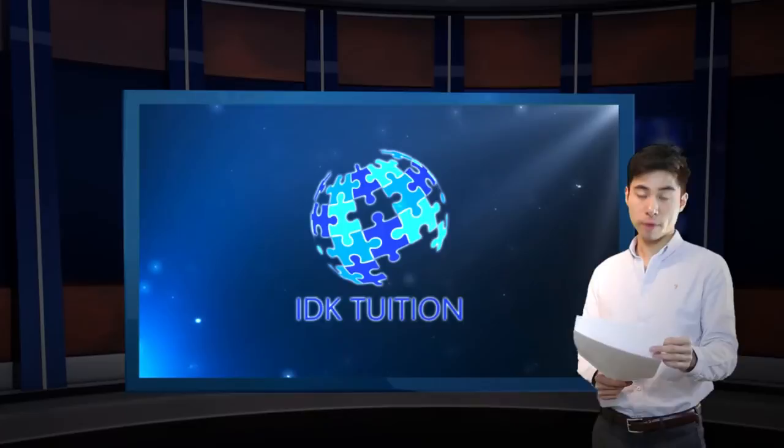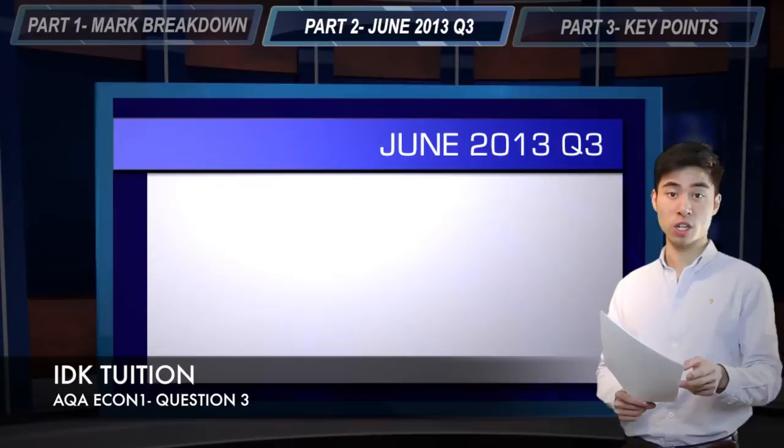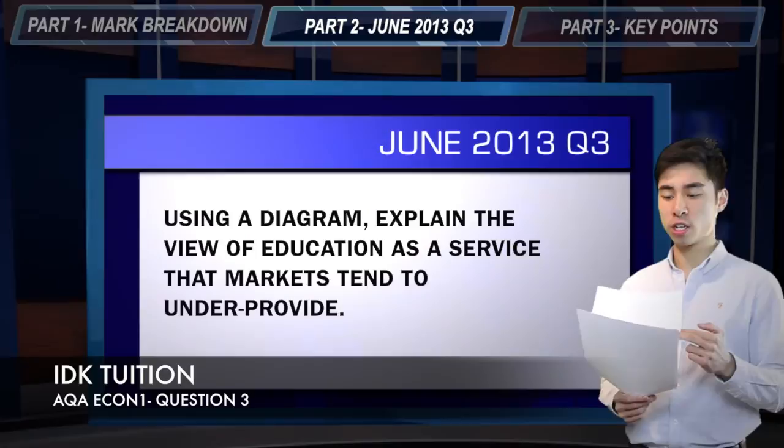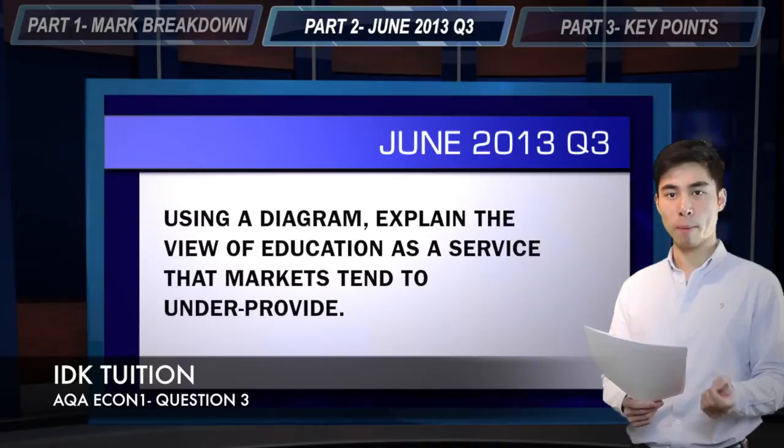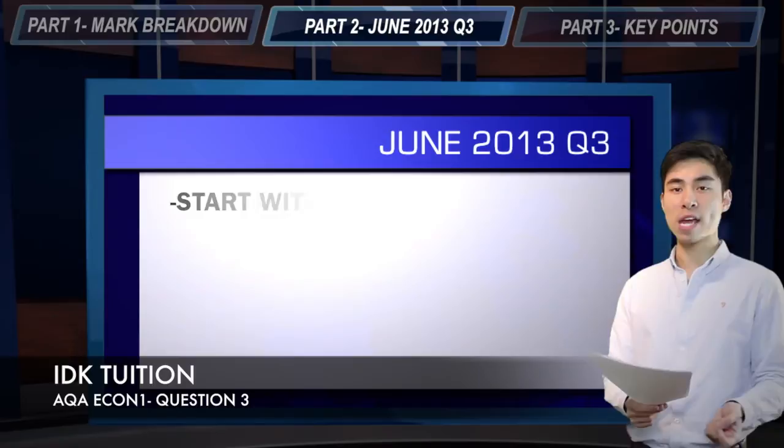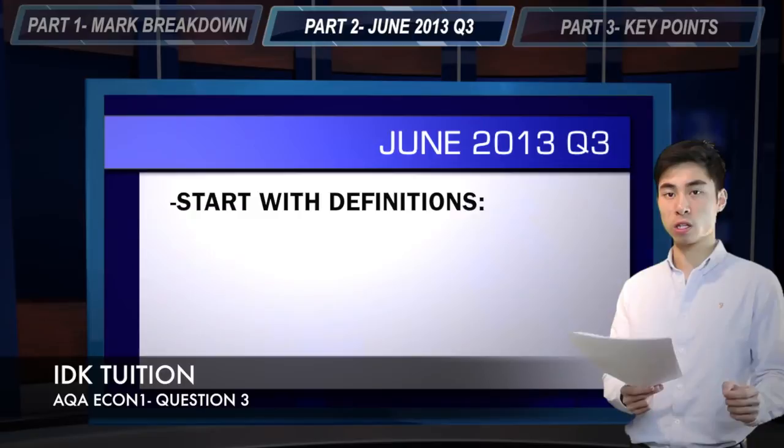We're going to flesh this out by taking a look at June 2013, context number one, question number three. It says: with the help of an appropriate diagram, explain the view of education as a service which markets tend to under-provide. My general strategy approaching these diagram-type questions is to include your definitions first. Here it's very easy to see what you're going to define.